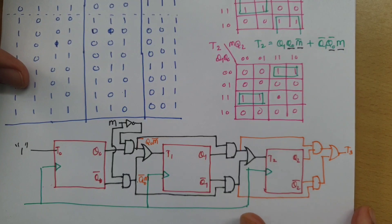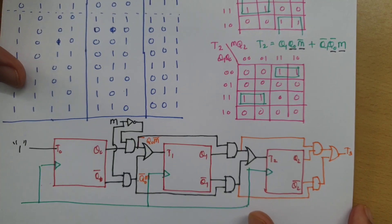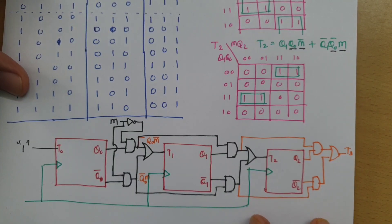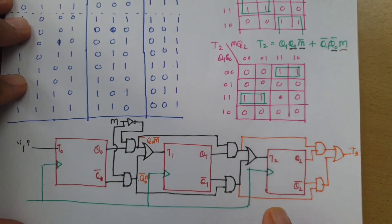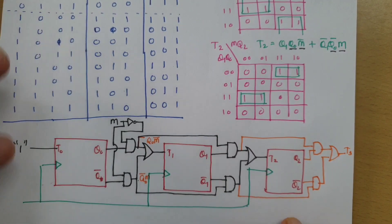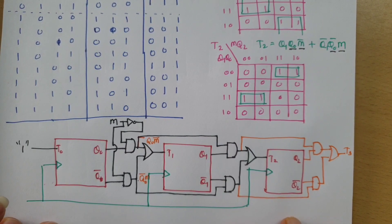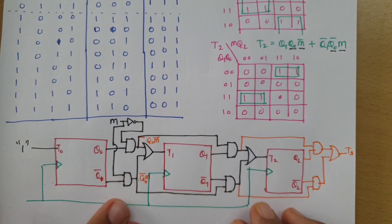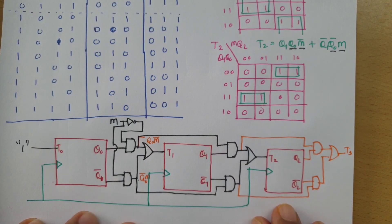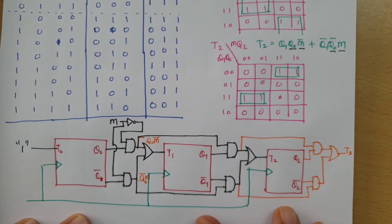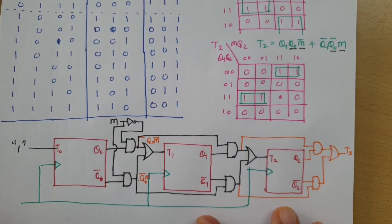For a 4-bit counter, the process is the same — the existing circuit does not change, but we add one more flip-flop and calculate T3 using two additional AND gates. Also, if a JK flip-flop is specified, you can short J and K to make it behave as a T flip-flop, keeping the same process. I hope it is now clear how to design a 3-bit synchronous up-down counter.